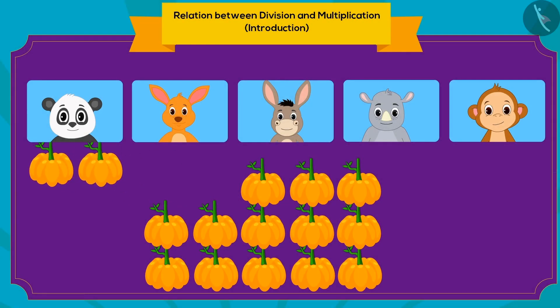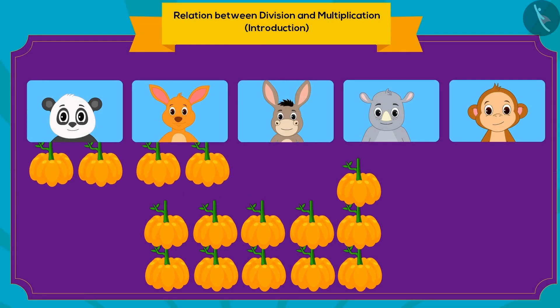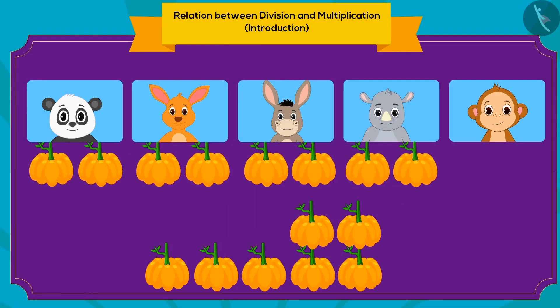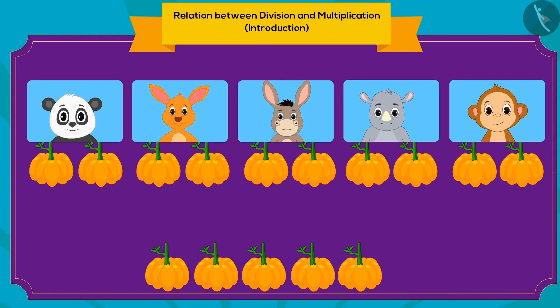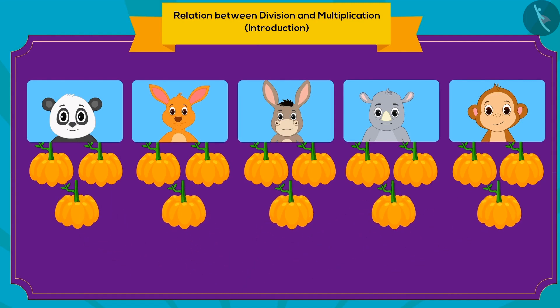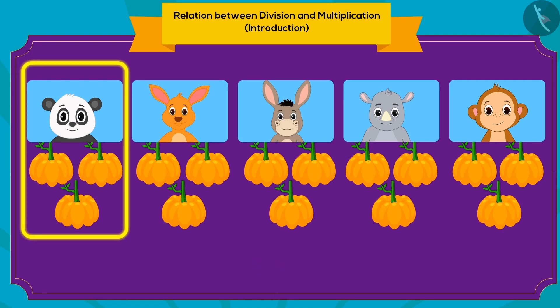Chanda first gave two pumpkins each to her five friends. Then she gave one more pumpkin to each. How many pumpkins will Chanda give to each friend? Three pumpkins.